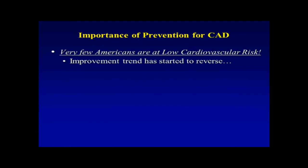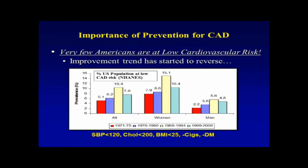There had been a trend towards improvement, but that has started to reverse. This is actually the percentage of the U.S. adult population who is at low risk — ideally 100%, but in the most recent sample, under 8% were at low risk, meaning blood pressure perfectly normal, cholesterol normal, normal body mass index, no cigarette smoking, and no diabetes. In the late 80s and early 90s we had gotten up over 10%, but with the increase in obesity and diabetes, which are usually associated with increasing blood pressure, this trend has reversed.